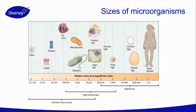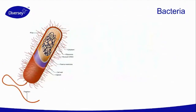In this schema you can see the different sizes of microorganisms. Viruses are the smallest of all the microorganisms and require specific equipment to see them, such as an electron microscope. Let's start with the first group: bacteria. You can see a schematic picture of one type of bacteria, but of course there are many more, which we'll discuss in more detail.